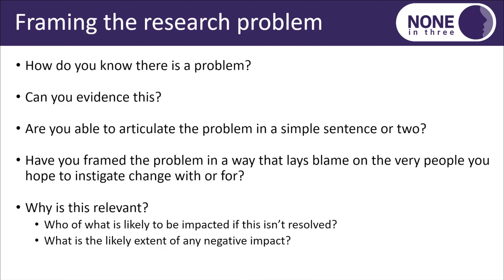When framing the research question, we need to think about how we know there's actually a problem. Is it just gut instinct, our own bias, our own experience, or do we objectively know there is one? It might be that the problem has been flagged to us — a lot of my research is with service providers for victims of gender-based violence and they come to me with a particular problem. We still need to evidence it through literature and their own data. We need to articulate the problem in a simple sentence or two so that other people get it as quickly as we do.